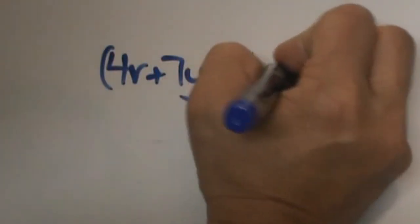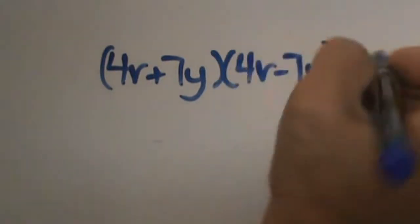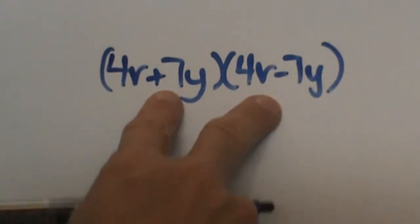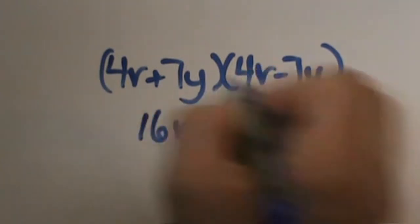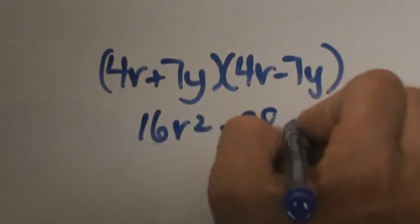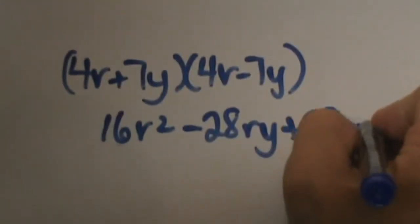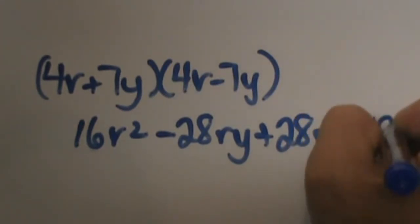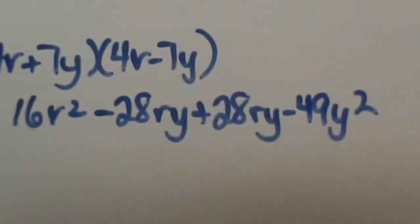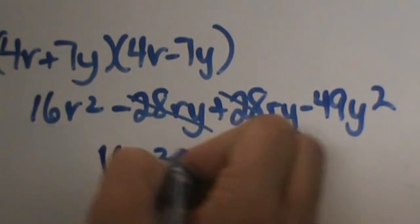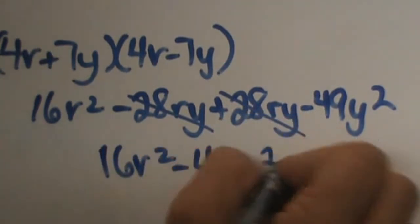Does the order matter? That is one question I have gotten recently from students — does the order of this product matter? And it does not, because order does not matter. Think about 3 times 4 and then 4 times 3: you are going to get the same product, so it really does not matter. First, outer, inner, and last — and then from there I can cross those out and I get 16r squared minus 49y squared.